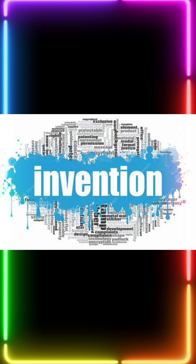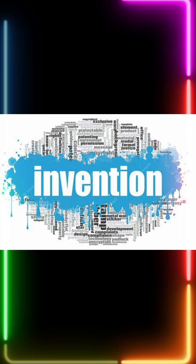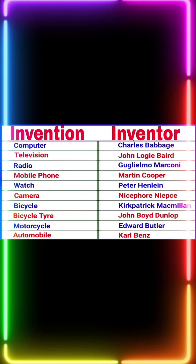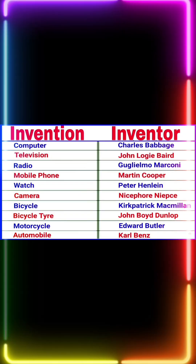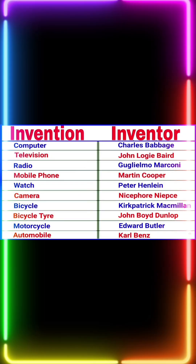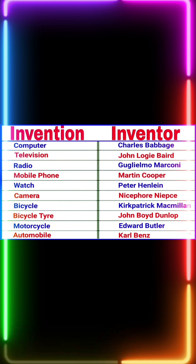Invention, from the basic theory, is finding a new system. For example, Graham Bell's telephone is an invention. Thomas Alva Edison's light bulb is an invention. Marconi's wireless system is an invention.